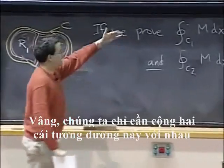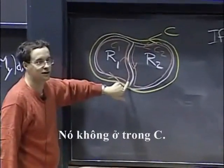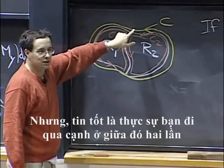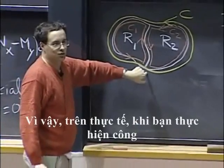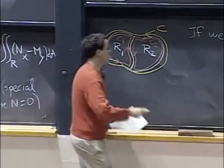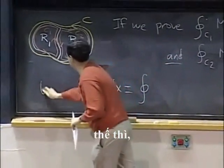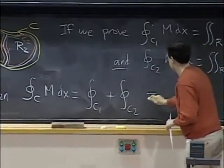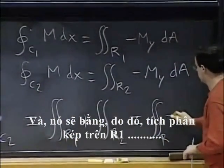How do we do that? We just add these two equalities together. Why does that work? There is something fishy going on because C1 and C2 have a piece in the middle that is not in C. If you add the line integrals along C1 and C2, you get these unwanted pieces. But the good news is you actually go twice through that edge in the middle — it appears once in C1 going up and once in C2 going down. So when you sum the work, these two contributions cancel. The line integral along C will then be the sum of the line integrals on C1 and C2, which equals the double integral over R1 plus the double integral over R2 — that is, the double integral over R of negative M_y.